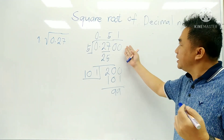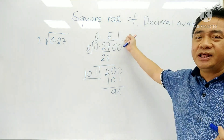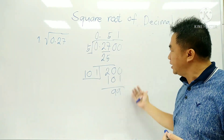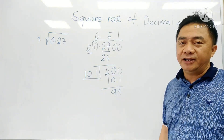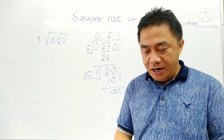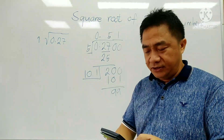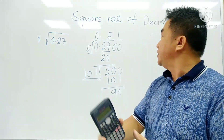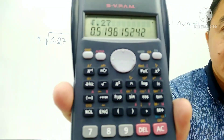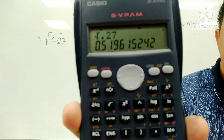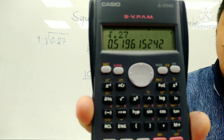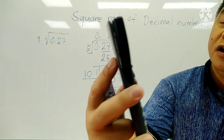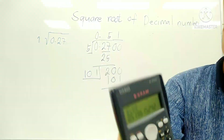We can still continue — if you like 3 digits, 3 decimal numbers, you just add 2 zeros here and continue dividing. Now we're going to check whether our answer is correct. We have the square root of 0.27 — the square root of 0.27 is 0.51, and we have there 9, 6, and so on.